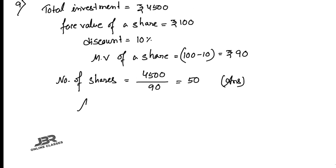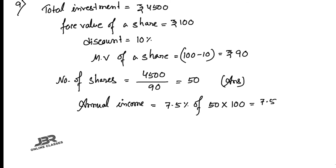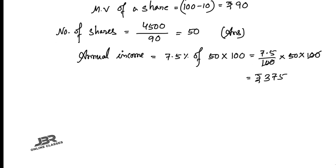For his annual income: income = 7.5% × 50 shares × ₹100 face value = (7.5/100) × 50 × 100 = 7.5 × 50 = ₹375. That is your second answer.